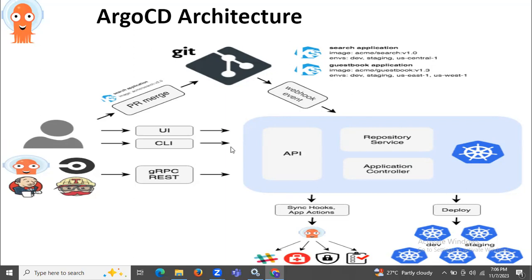The Repository Service is an internal service responsible for cloning remote git repositories and generating the needed Kubernetes manifests. So its main function is to clone your git repository and generate the Kubernetes manifest.